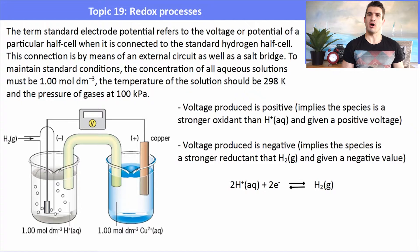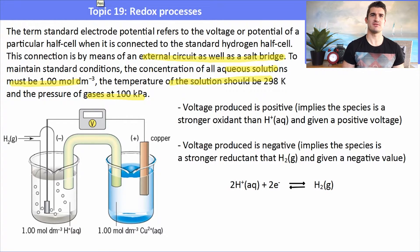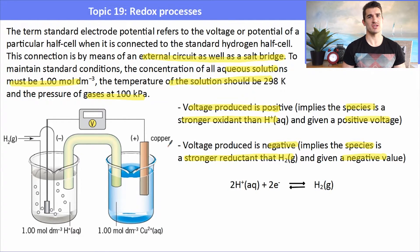If the voltage produced was positive when a cell was connected to the SHE, it implies the species is a stronger oxidant than H⁺ and is given a positive voltage. If it produced a negative voltage, it implies the species is a stronger reductant than H₂ and is given a negative value. All measurements required 1 mol dm⁻³ solutions, gases at 100 kPa, and a temperature of 298 K — we simply used hydrogen to determine the E° of all other half cells in the series.